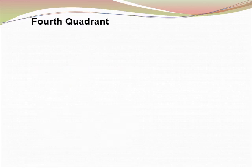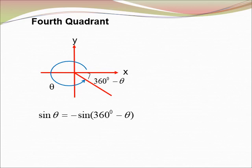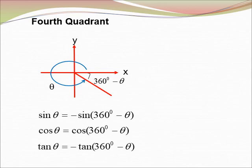For the fourth quadrant, if we want to change from the fourth quadrant to the first quadrant: sin theta equals negative sin(360° − θ), cos theta equals cos(360° − θ), and tangent theta equals negative tangent(360° − θ).